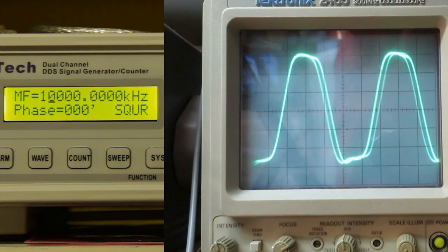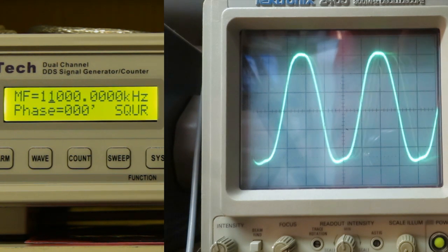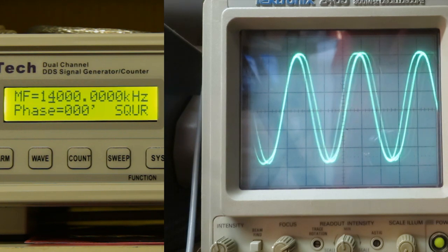By the way, I have connected the generator to the scope directly with a coaxial cable so there is no influence of a probably misaligned probe.